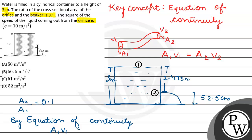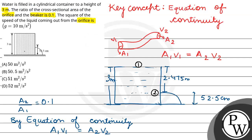From equation of continuity, A1V1 equals A2V2, we get V1 equals 0.1 V2. We will use this.